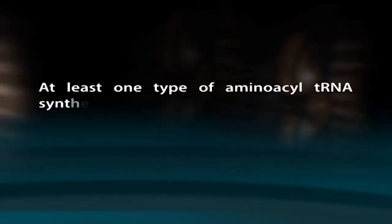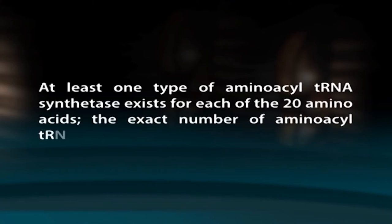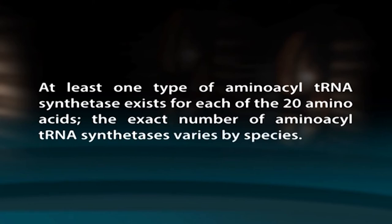Aminoacyl tRNA synthetases are enzymes responsible for tRNA charging. The RNA portion of the adapter molecule is created by RNA polymerase III; the corresponding amino acid must be added later once the tRNA is processed and exported to the cytoplasm. Through tRNA charging, each tRNA is linked to its correct amino acid by aminoacyl tRNA synthetases — at least one type exists for each of the 20 amino acids. These enzymes first bind and hydrolyze ATP to form a high-energy bond between the amino acid and AMP, expelling pyrophosphate; the activated amino acid is then transferred to the tRNA and AMP is released.